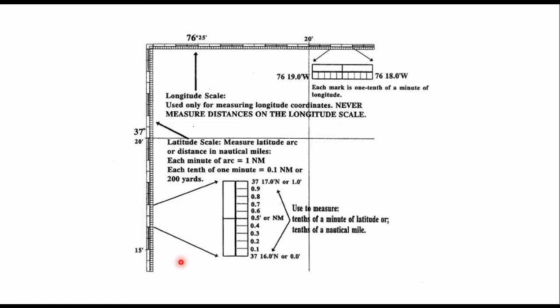If we look at this example, the latitude scale measures latitude arc or distance in nautical miles. Each minute of arc equals one nautical mile and each tenth of one minute equals 0.1 nautical miles or 200 yards. If we look at this example over here on the left, you have 37 degrees 16.0 north, and 37 degrees 17.0 minutes north right here. In between them we have one-tenth of one-minute arcs.